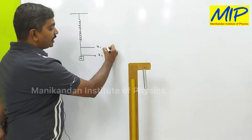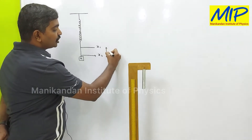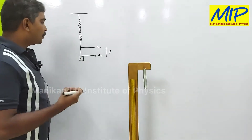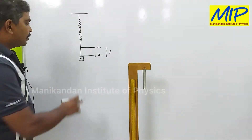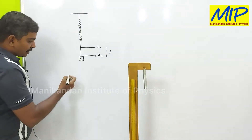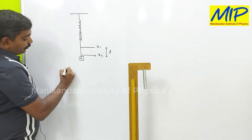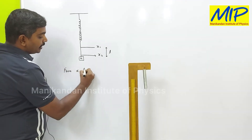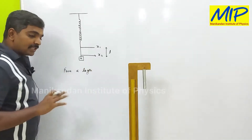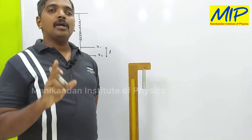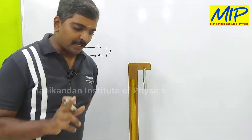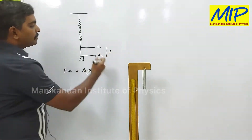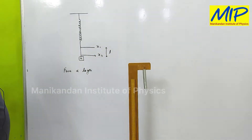The distance between these two points is called l — it is the extension or the length produced by the mass m. This length shows that my force is directly proportional to my length. The force acting on the spring is directly proportional to the extension, the length between x1 and x2.